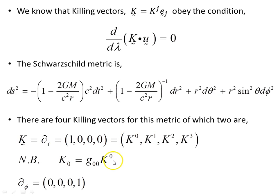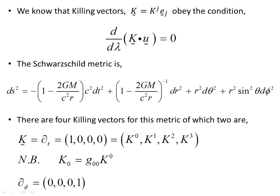We can lower its upper index using the metric. The other Killing vector for Schwarzschild — the second one — is this object here in the angular direction, and the basis vector points in the angular direction of phi.